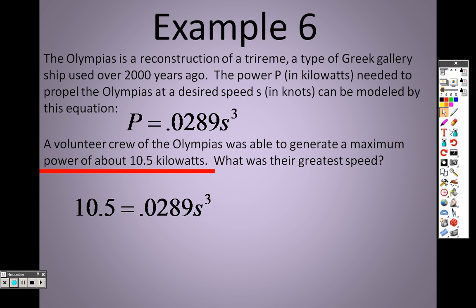So I plug that in for P, and I need to get s by itself. So in order to get s by itself, I just divide both sides by 0.0289. And when I do that, that gets s all by itself, and I get roughly 363.